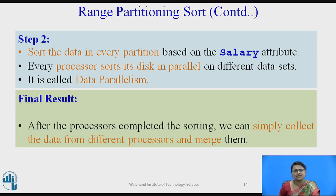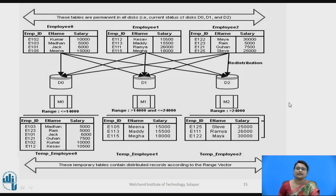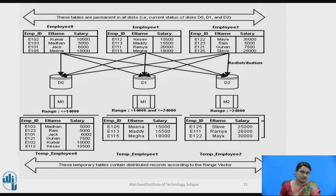The final result: after processors complete sorting, all the data in every vector partition is automatically sorted. You simply need to merge them. Partition 1, partition 2, and partition 3 can be merged in order, and that merged data is the final sorted result. This is what range partitioning sorting is, where parallelism is applied specifically for the sorting step, combined with the range partitioning technique for redistribution.